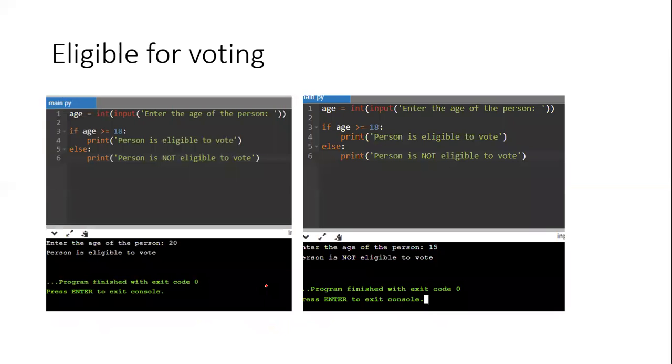So let's look at what the coding would have looked like if we had typed it in our compiler. So in line one we are inputting, we are entering the age of the person. In line two we make our check and if the age is greater than or equal to 18, eligible to vote.